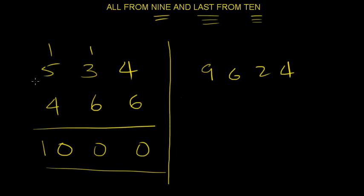So, all from 9. All from 9. Now, last from 10. Right? What do you get? About 0. 6, 3. We know. So, it would be 7. It would be 6.